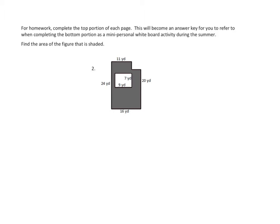Let's look at number two. We're asked to find the area of the figure that is shaded. We have something that looks kind of like a rectangle, but it's not a full rectangle because it has this little carve-out here in the corner, and then there's another rectangle carved out of the middle. We don't know any easy formula for this shape, but we can pretend it goes all the way to the corner, use that formula, and then subtract the little wedge and the rectangle to get the shaded area.